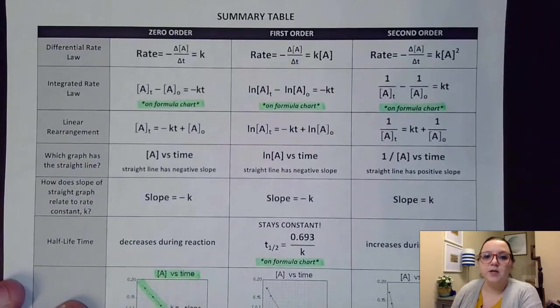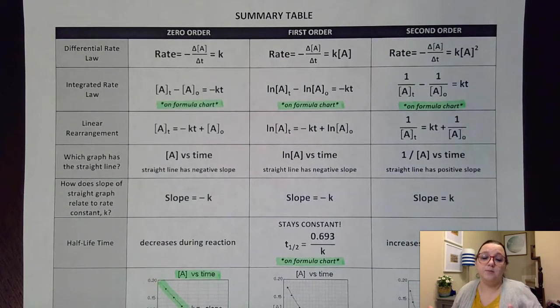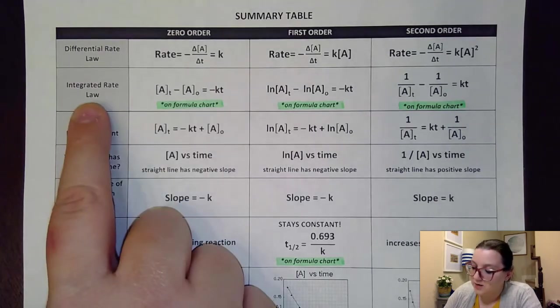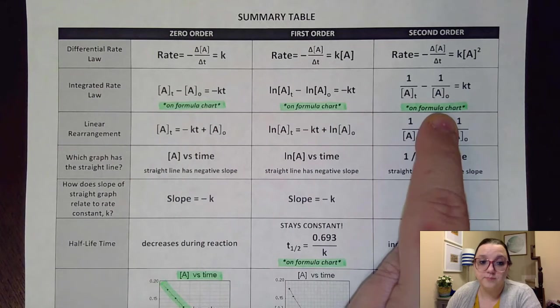To see all of this information kind of collected together in a graph, you notice here on this table, I have basically put on here zero first and second order to compare. By the way, you would never see any other orders asked about in these integrated rate laws. So, you don't have to worry about seeing like a third order in something like this. So, again, our integrated rate law formulas that we see right here are on our formula chart.